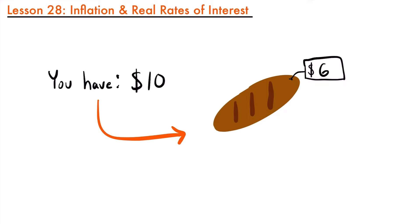So the price would be $6 per loaf of bread. Now that $10 can only buy you one loaf of bread instead of two, because two loaves would now cost $12, not $10. The purchasing power of that $10 decreased over time because the price of bread increased. The rate at which that happened is known as inflation.